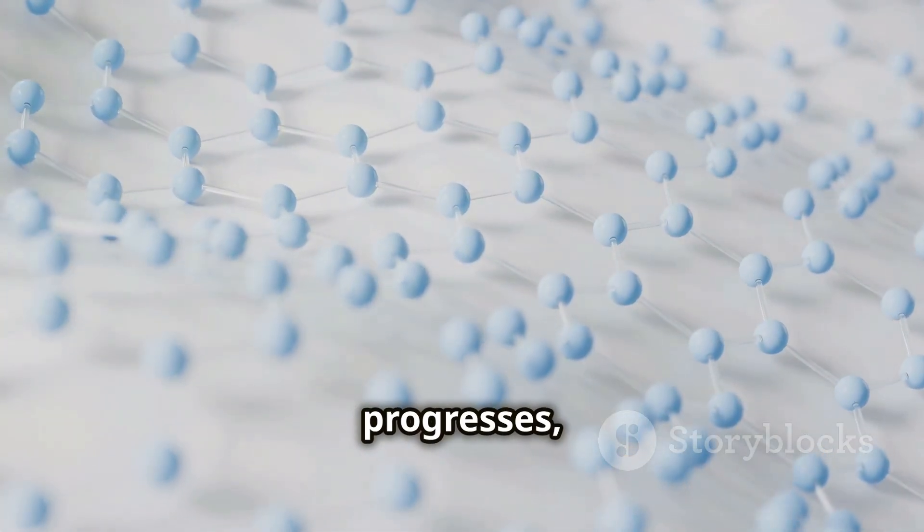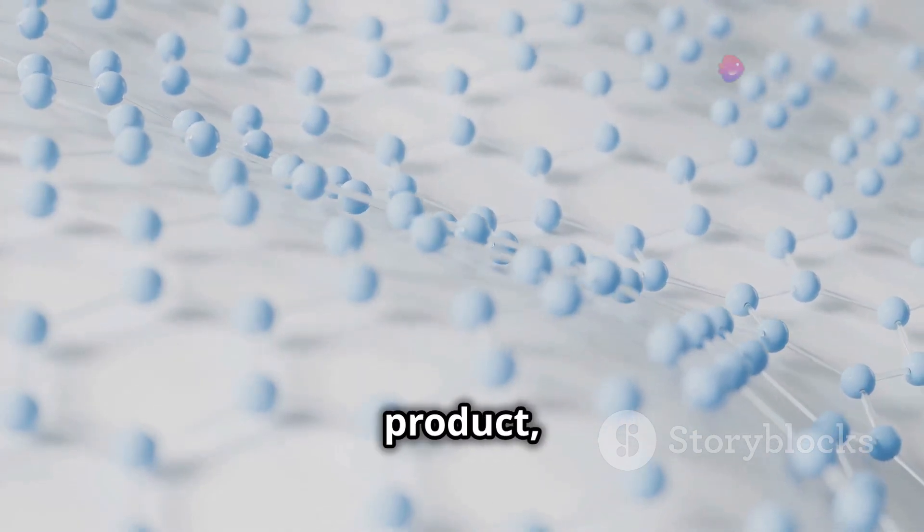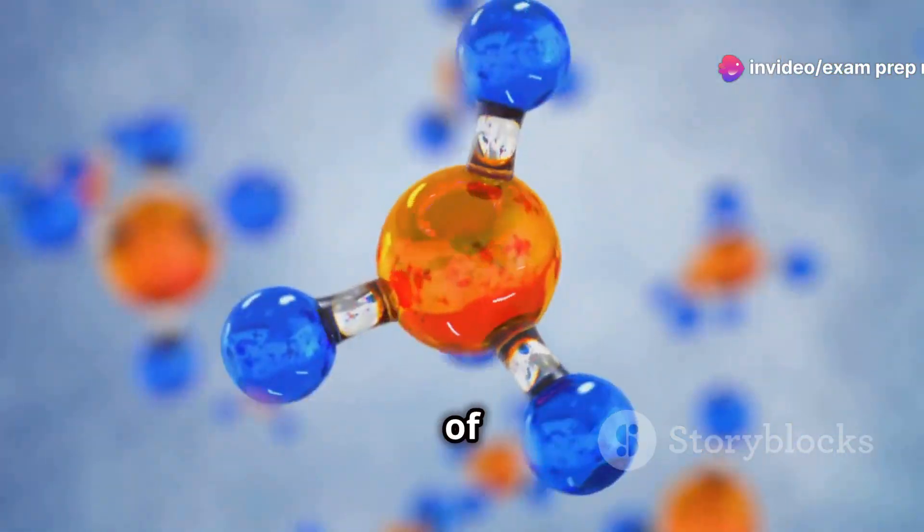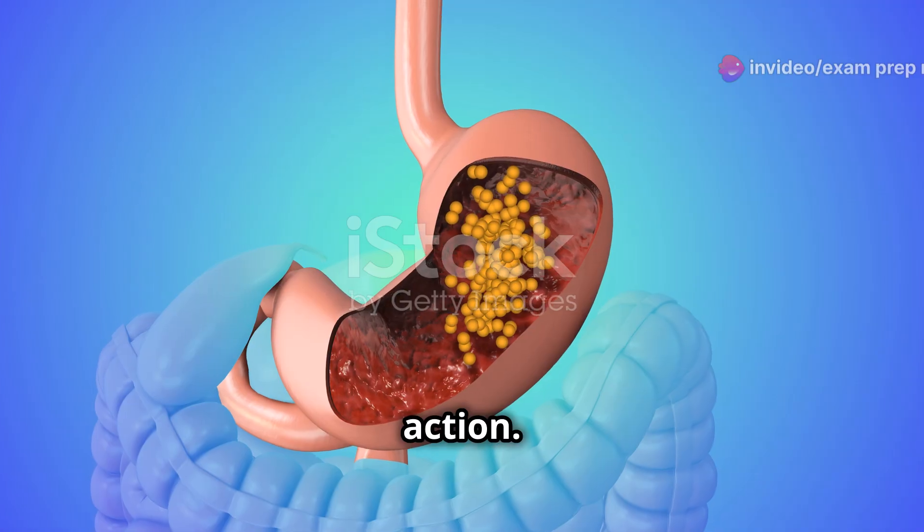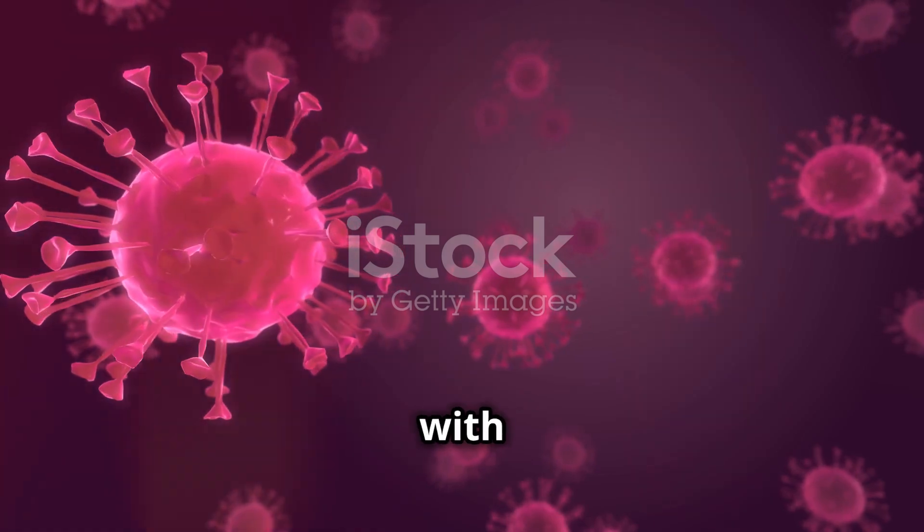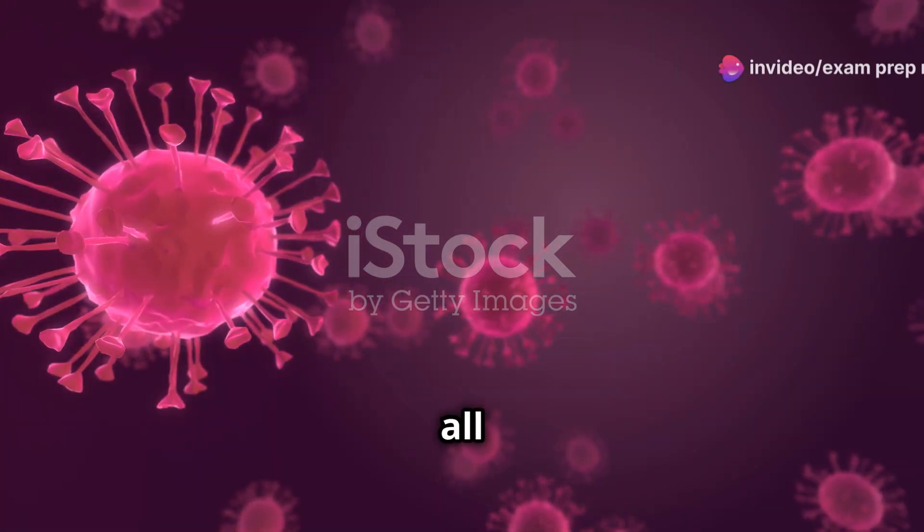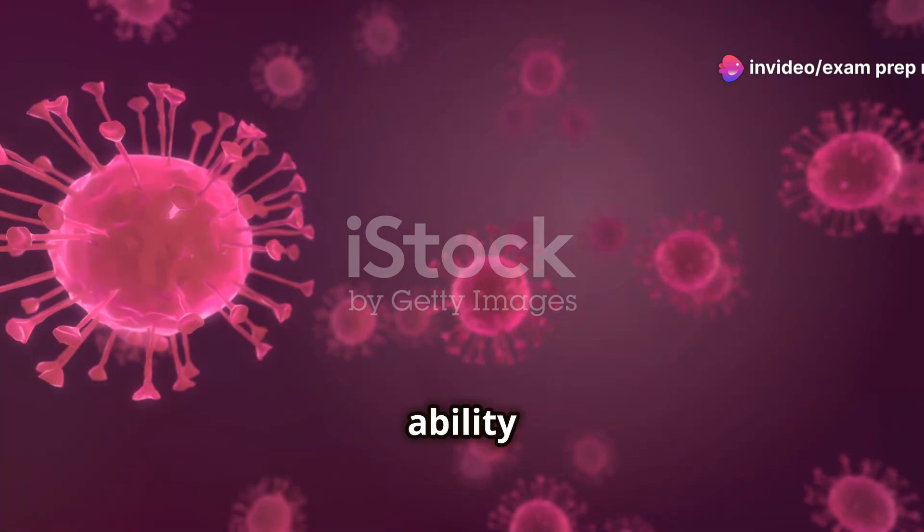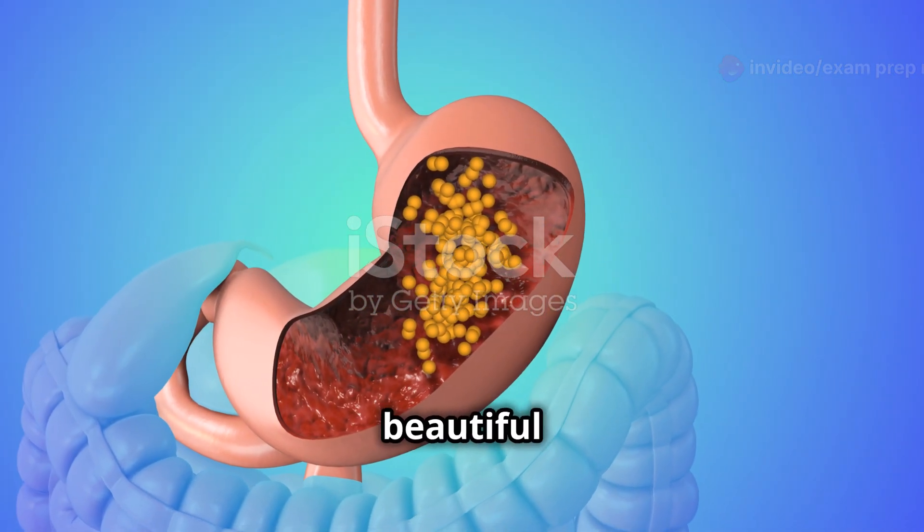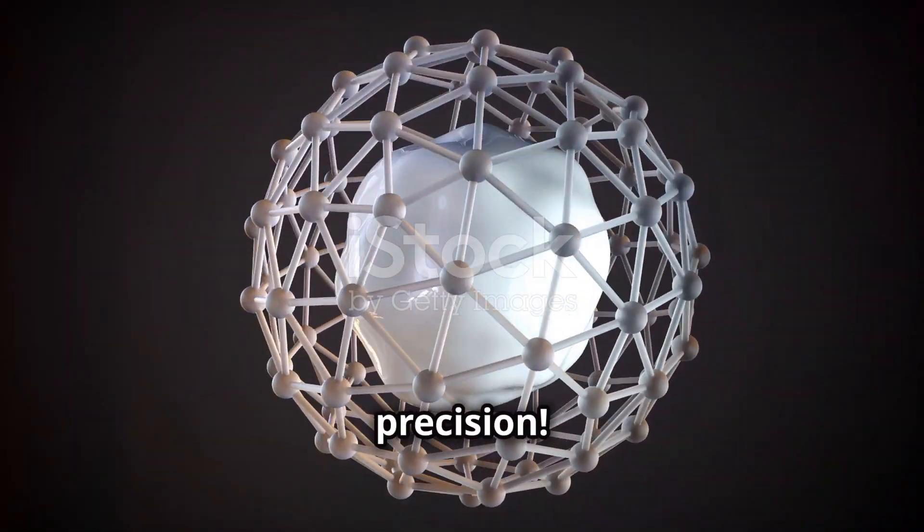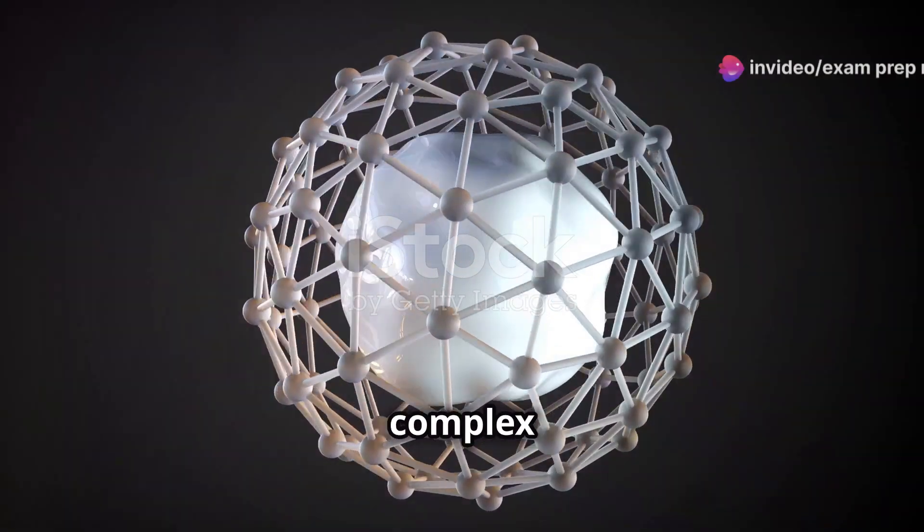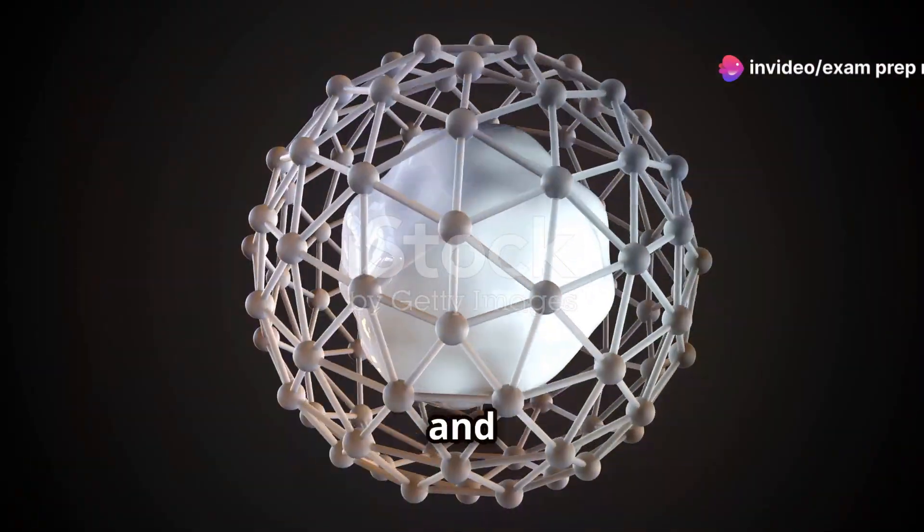As the reaction progresses, the substrate is transformed into the product, the desired end result. This transformation is the culmination of the enzyme's catalytic action. The product then detaches from the enzyme, leaving the enzyme free to bind with another substrate molecule and start the dance all over again. This ability to repeatedly catalyze reactions makes enzymes incredibly efficient. It's a beautiful cycle of efficiency and precision.